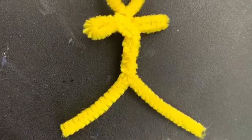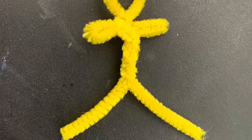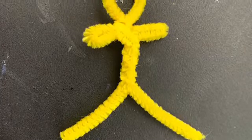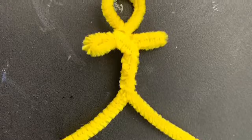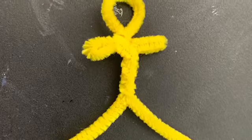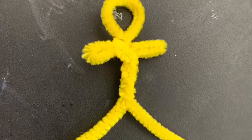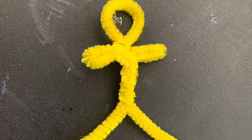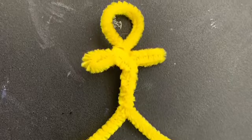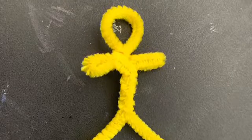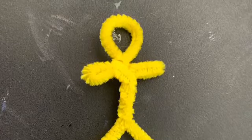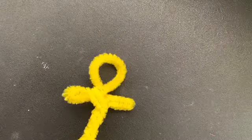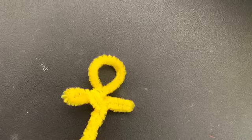Next we will create the body of our parachute man. Twist the pipe cleaner down, leaving enough space for the legs. To finish off the body of your parachute man, make the legs.